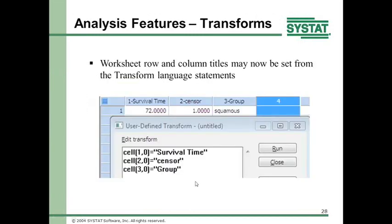Here's a little gem I use all the time for those who use transform language. Prior to this, you couldn't specify column labels inside the transform language. If you write a transform that outputs 15 columns of data, six weeks later you have no idea what each column represents unless you documented it elsewhere. By putting column titles in — where column titles are row zero — you know what the results are for sure. For example: column 1, row 0 = 'survival time'; column 2, row 0 = 'sensor'.